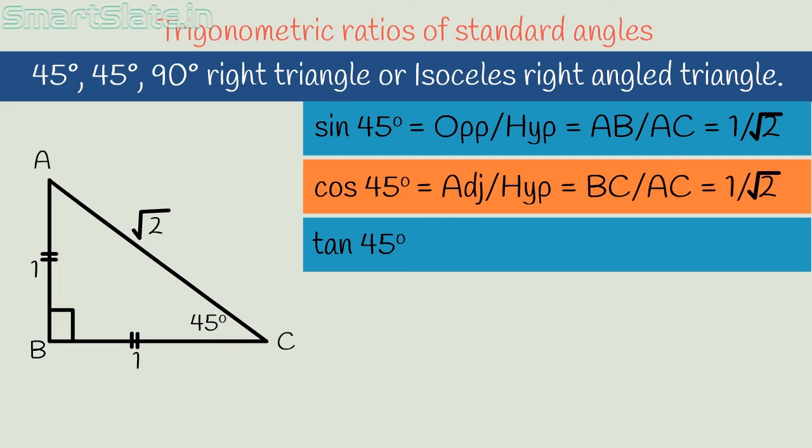Tan 45 degrees equals opposite side by adjacent side. It is 1 by 1 which is 1. So tan 45 degrees is 1. Now we have values of sin 45 degrees, cos 45 degrees, and tan 45 degrees.